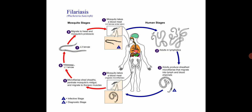The life cycle: the mosquito takes a blood meal and the infective stages develop. Male and female adults are found in the lymphatics; adults produce sheathed microfilaria that migrate into the lymph and blood channels. Mosquitoes take a blood meal and ingest the microfilaria. Microfilaria shed their sheaths, penetrate the mosquito's midgut and migrate to the thoracic muscle. The larval stages then migrate to the head and the mosquito's proboscis — this is how the mosquito stages and human stages alternate in the cycle of Wuchereria bancrofti.